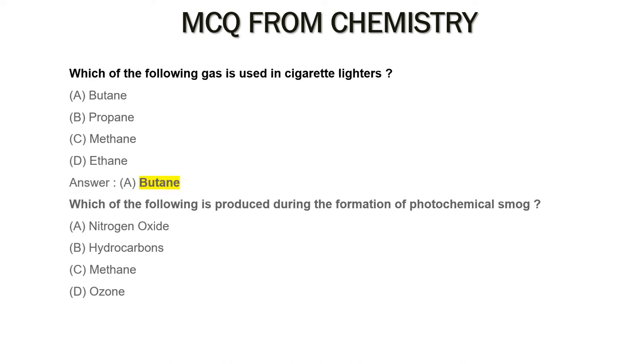Which of the following is produced during the formation of photochemical smog? Answer Option D: Ozone.